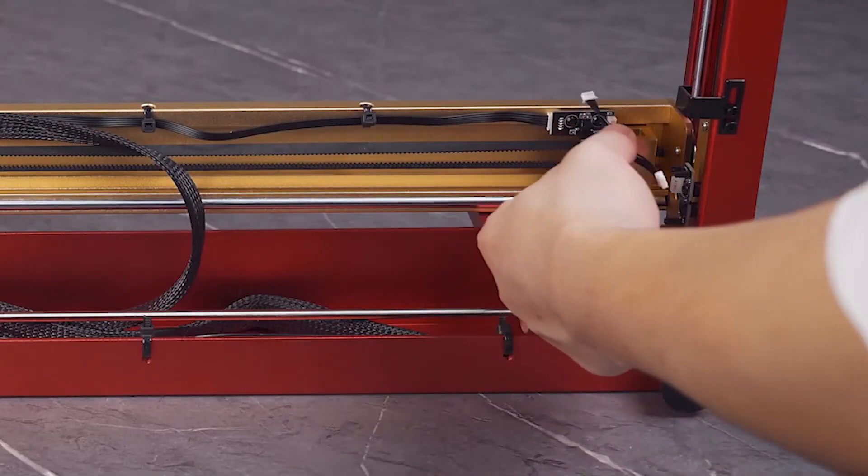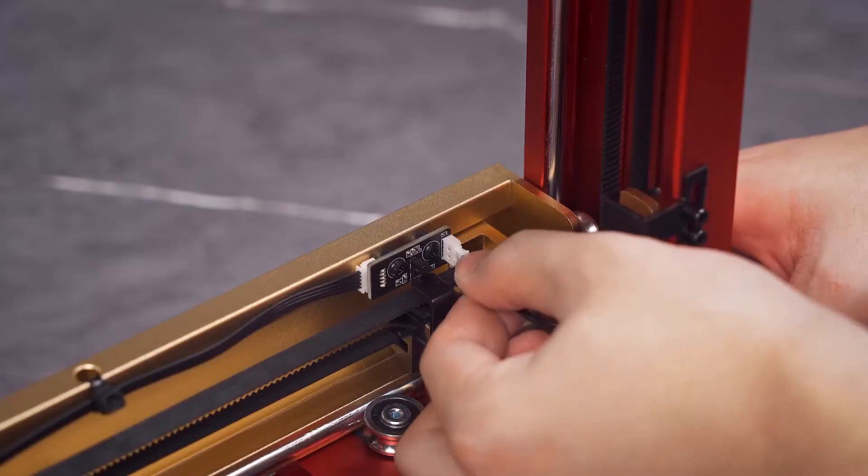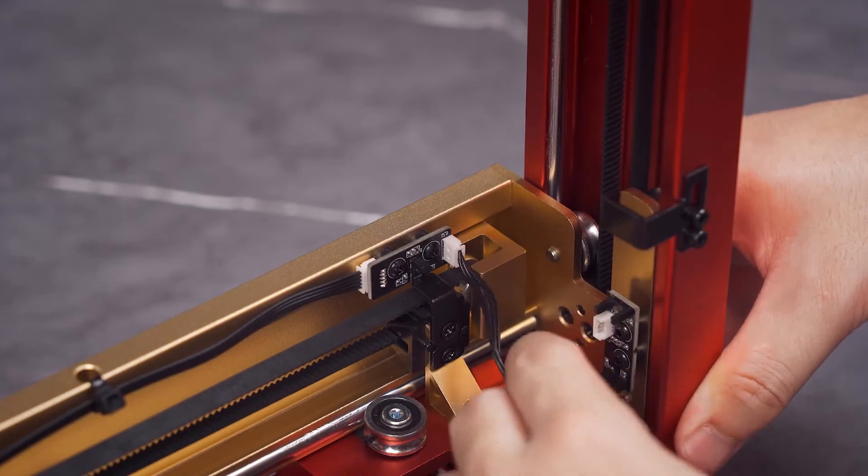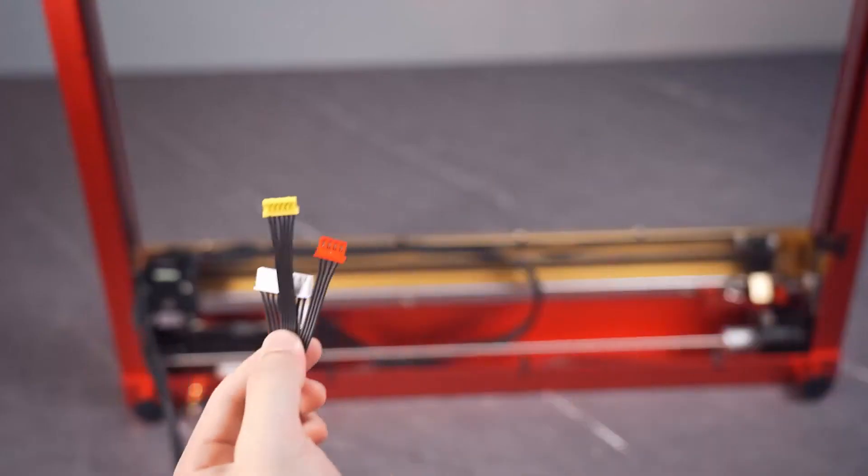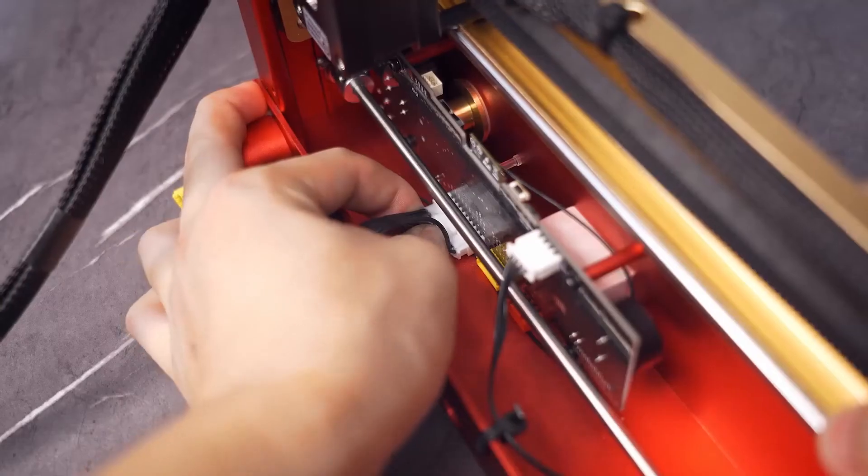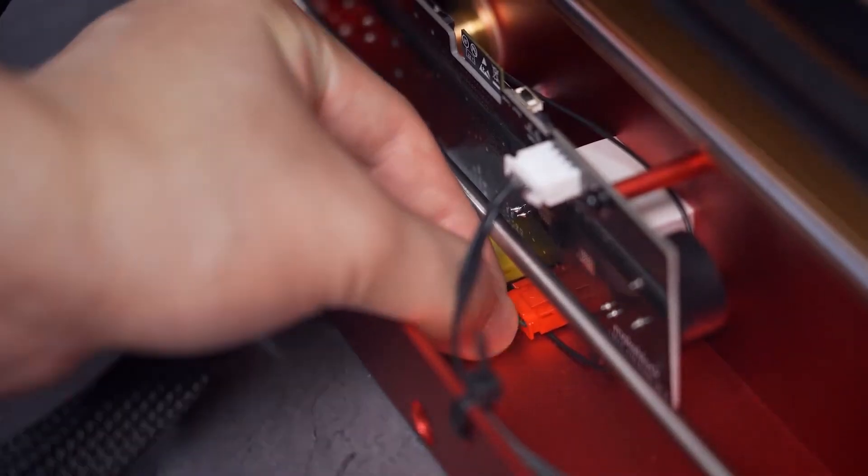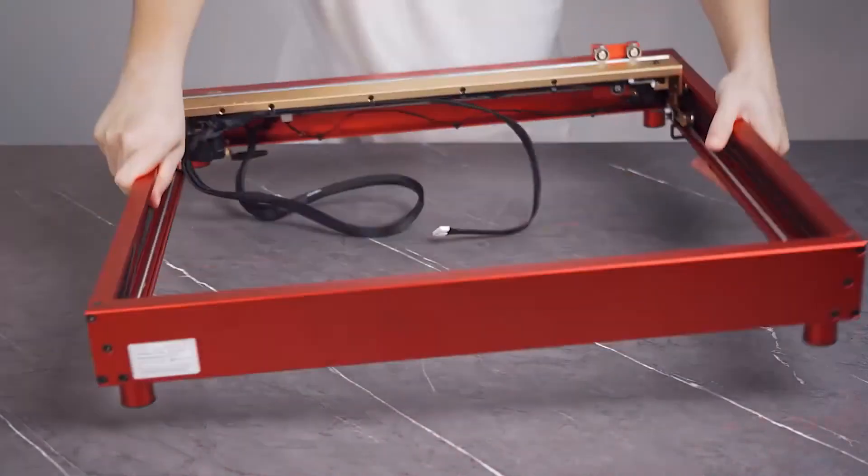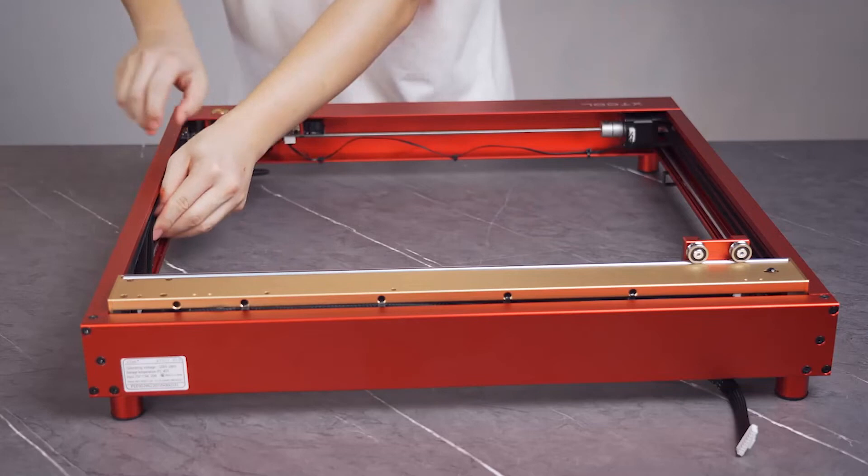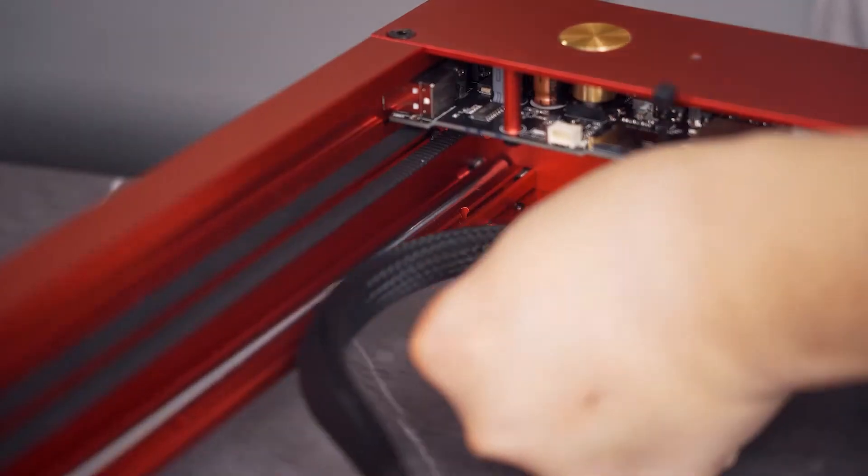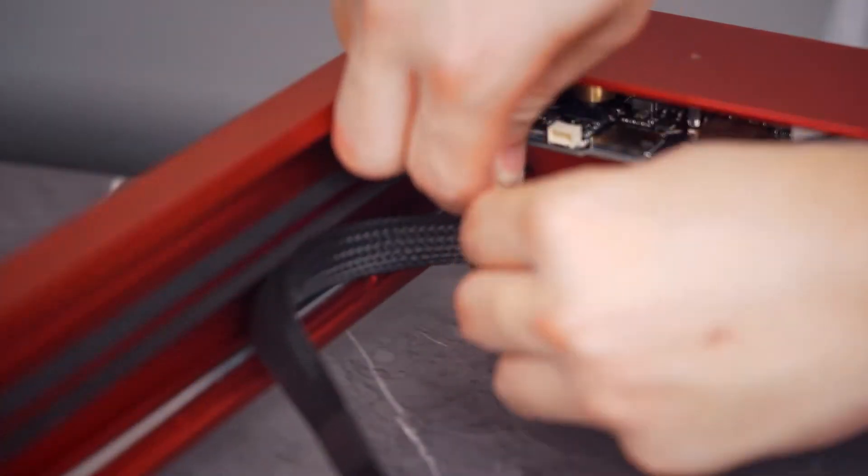Connect the limit switch component on the middle plate to the one on the slider of the left plate. Insert the connectors of the laser module, motor, and limit switch connection cables into the ports on the main control board. Use cable ties to fix the connection cables on the right plate.